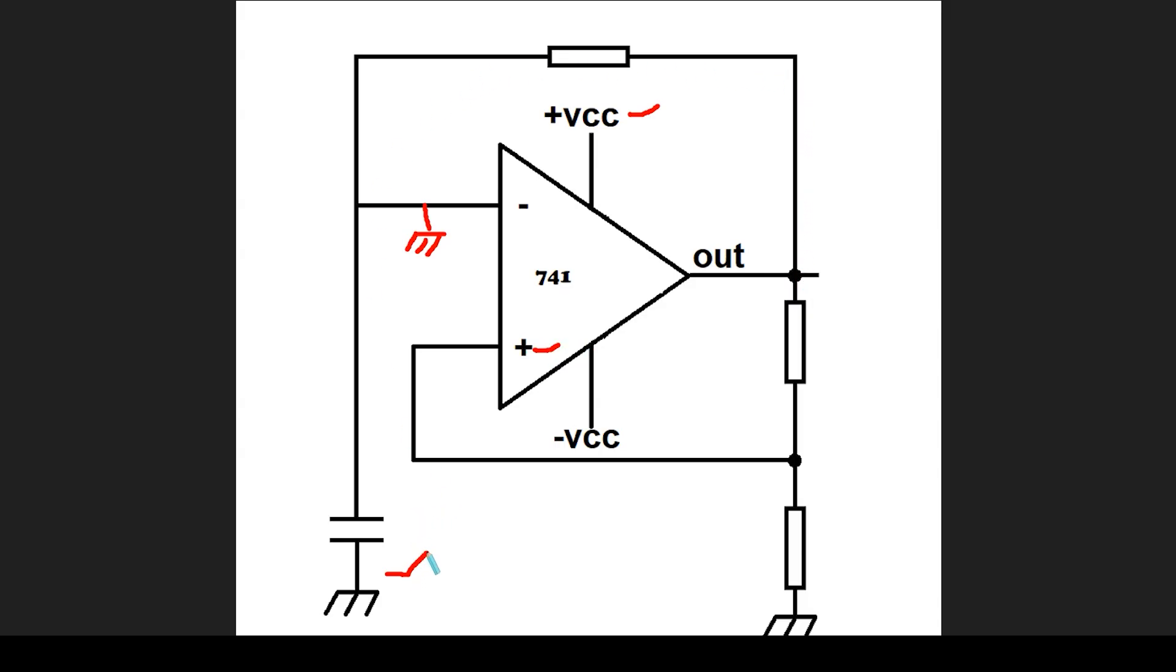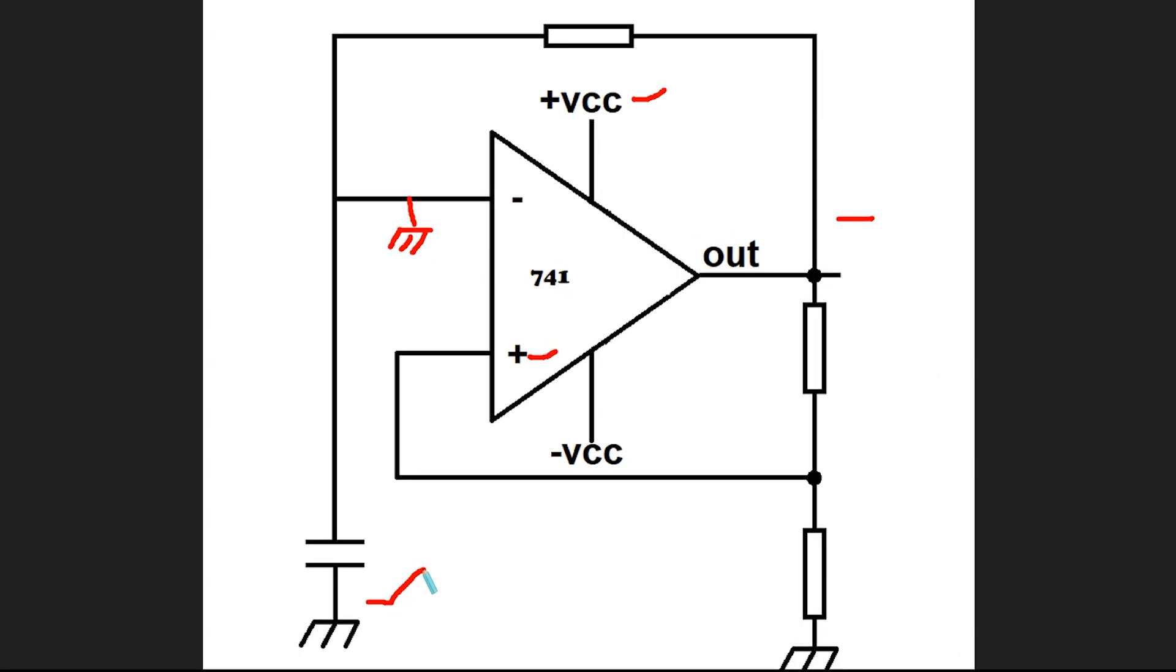The capacitor keeps charging until the voltage at the negative input becomes equal to the voltage at the positive input. At that point, the voltage at the negative input becomes slightly higher, and the output suddenly drops. Now the capacitor begins to discharge, and the voltage at the negative input falls. Once the positive input becomes higher again, the output flips back up, and the whole process repeats.